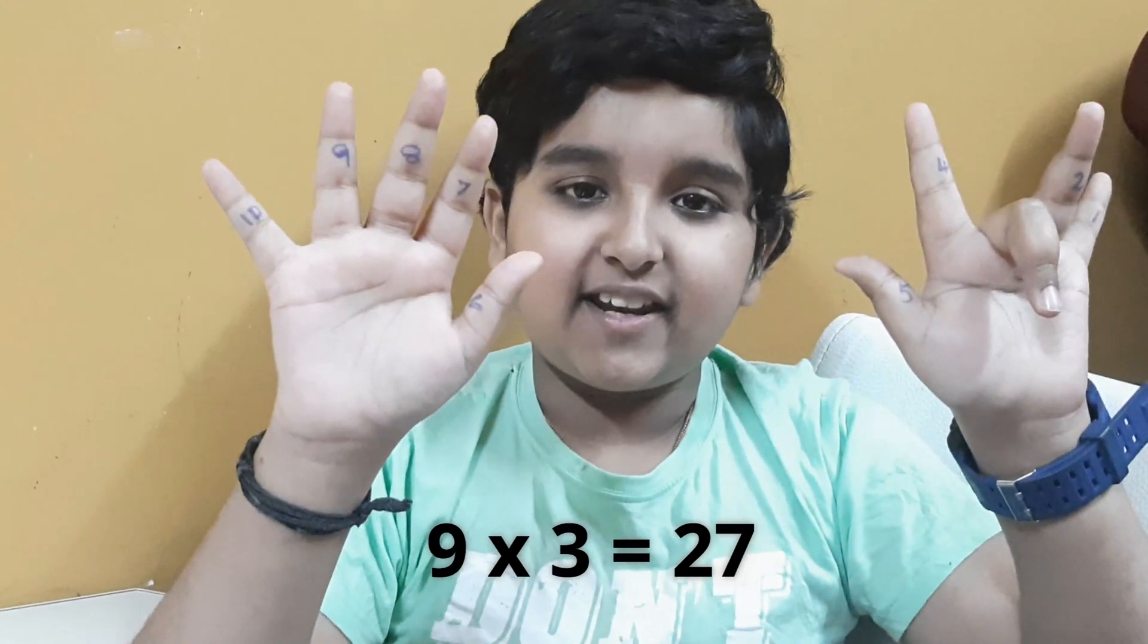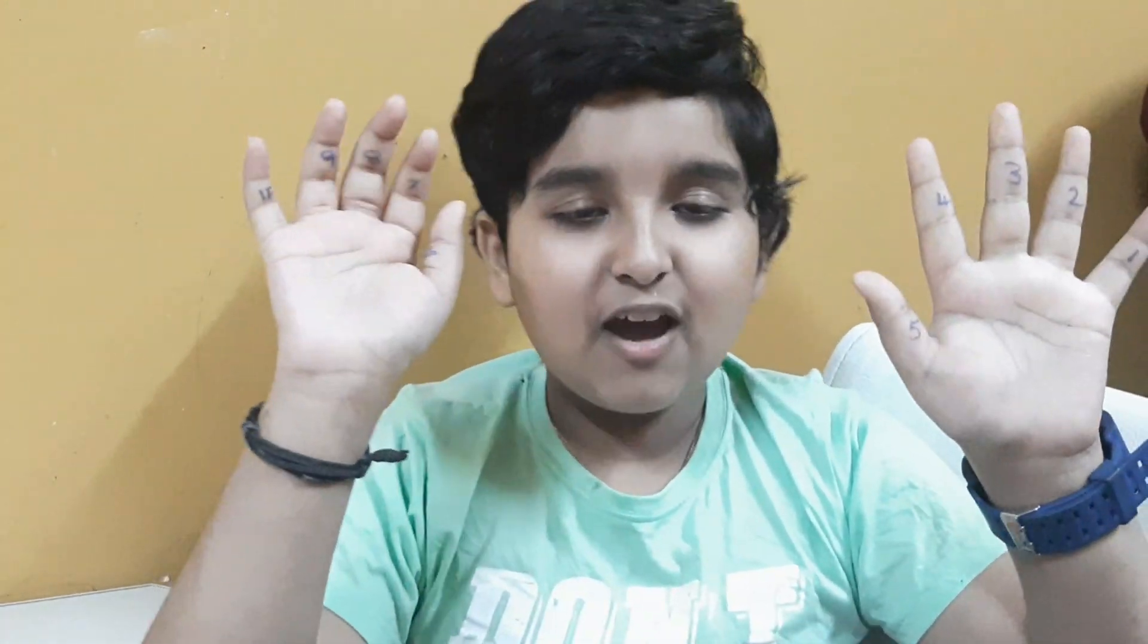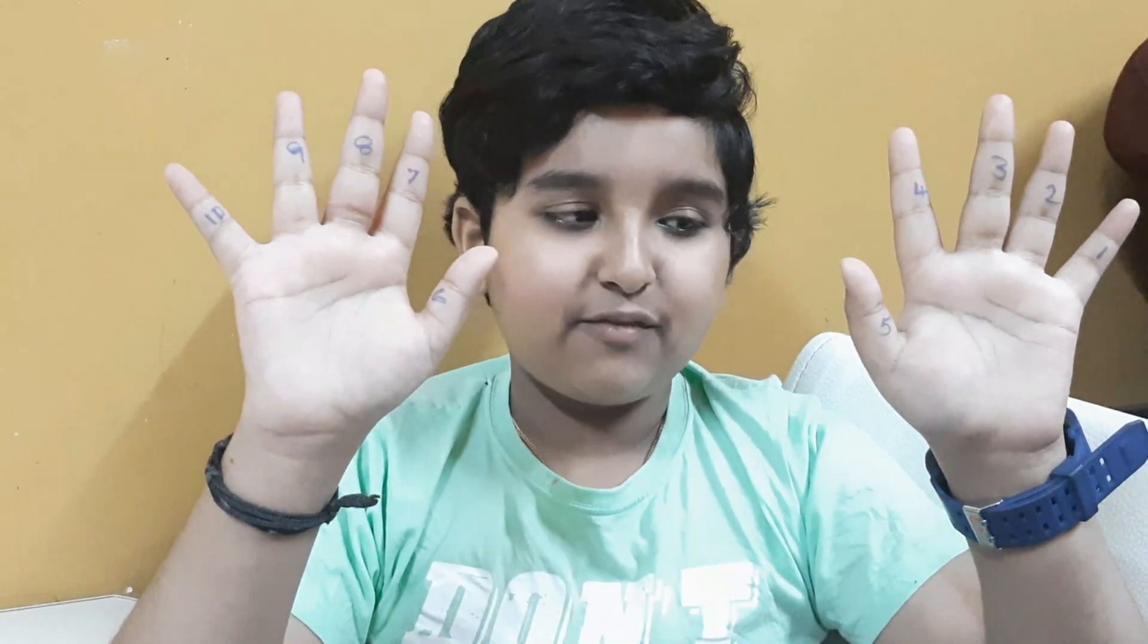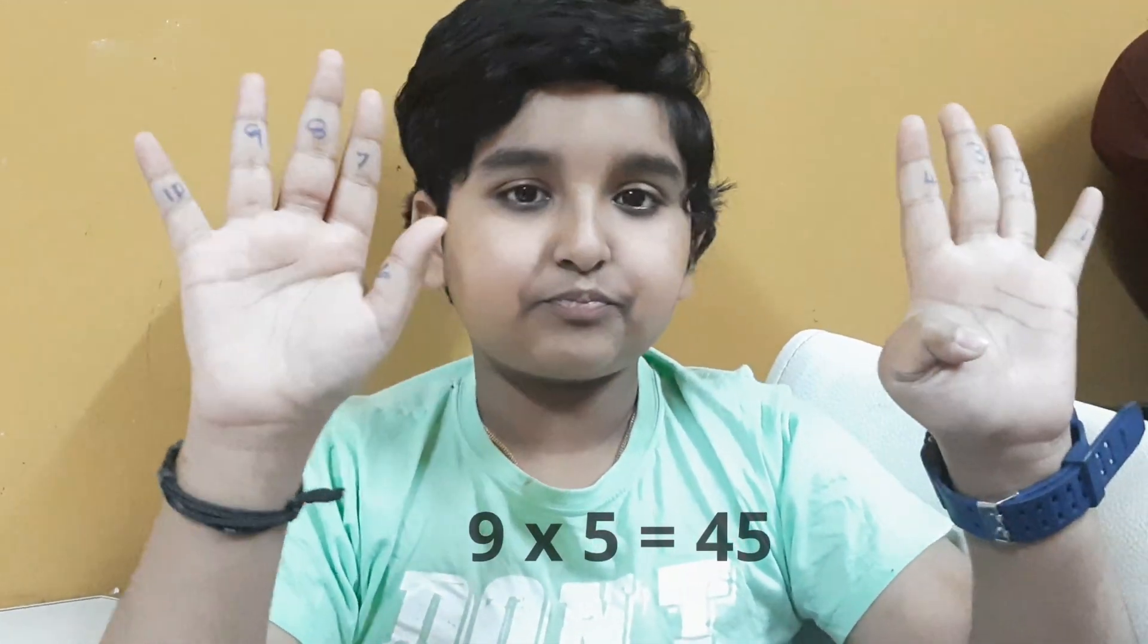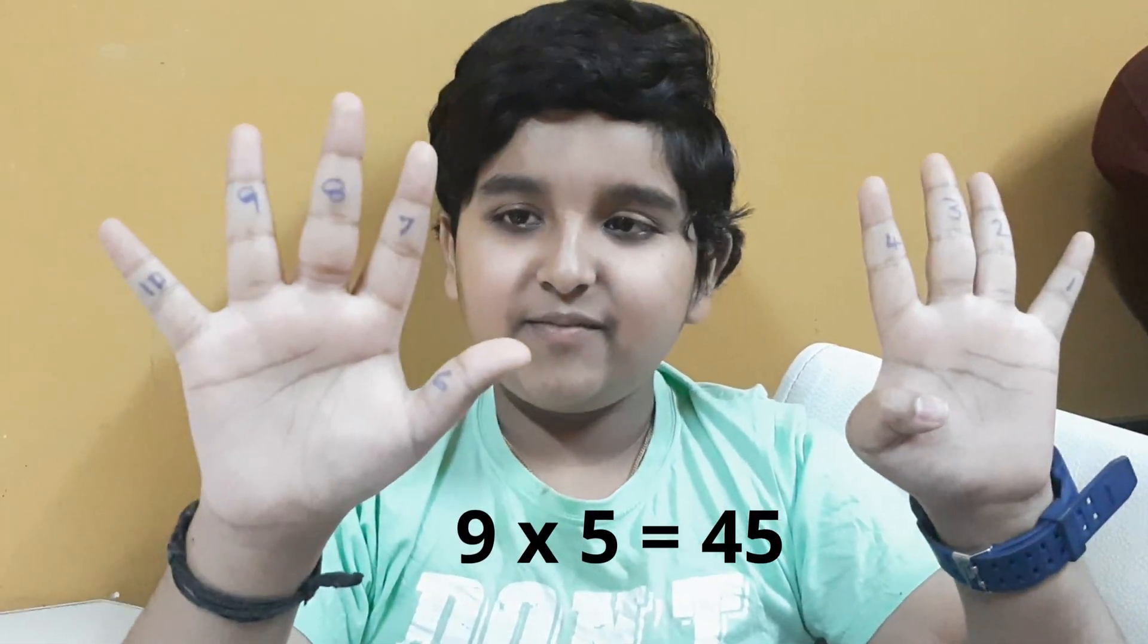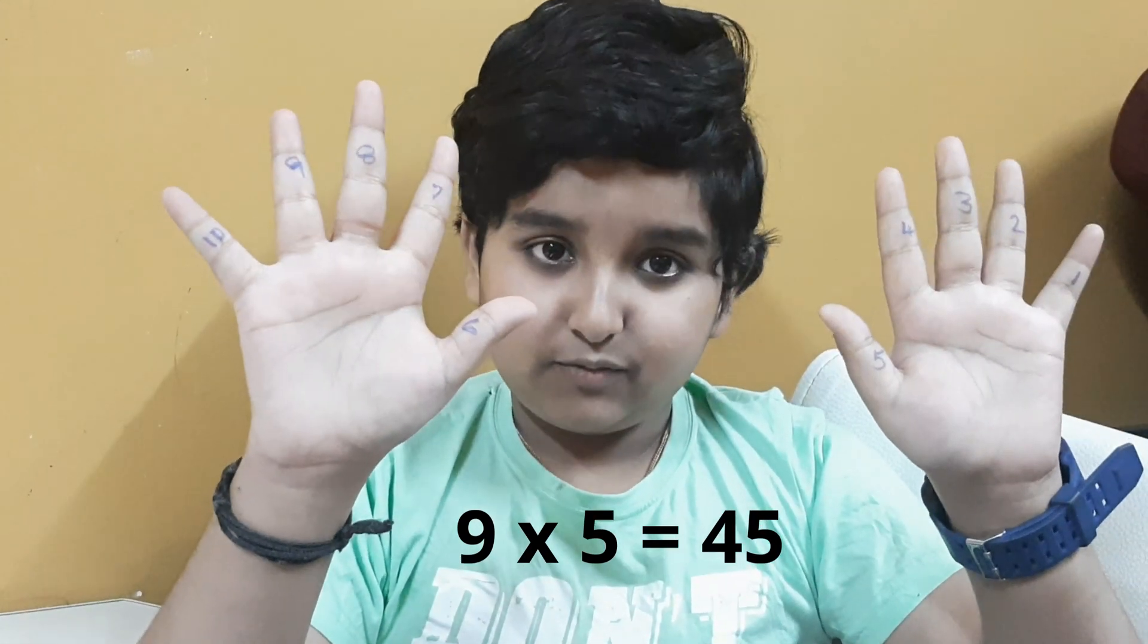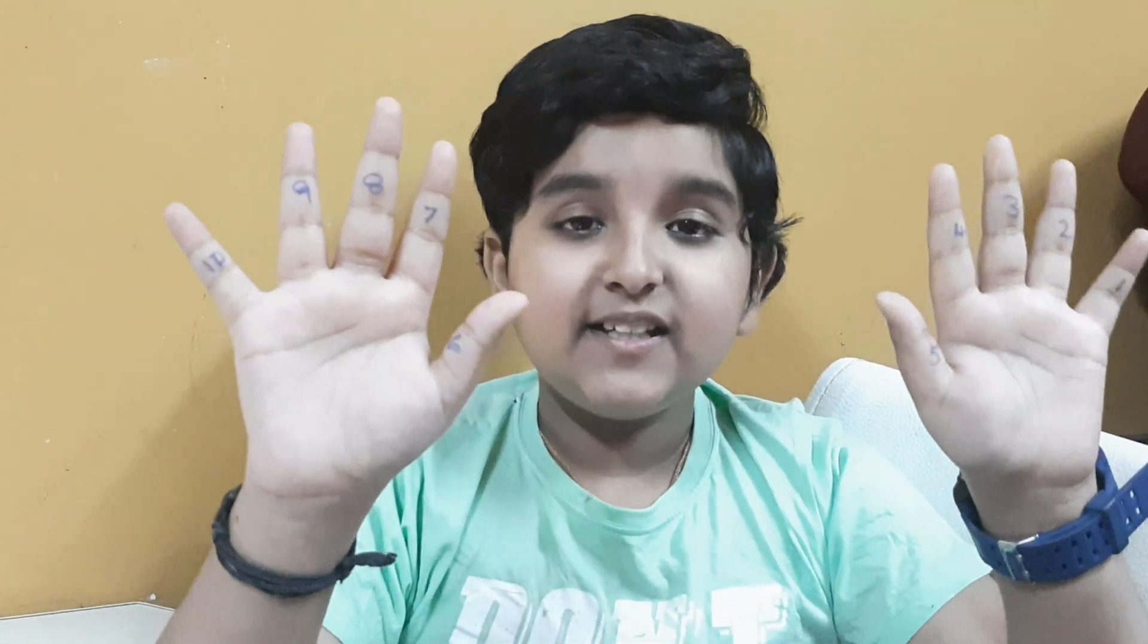Now next sum is 9×5. We have to close the fifth finger. How many remains? Over here 4, here 5. So the answer for 9×5 is 45.